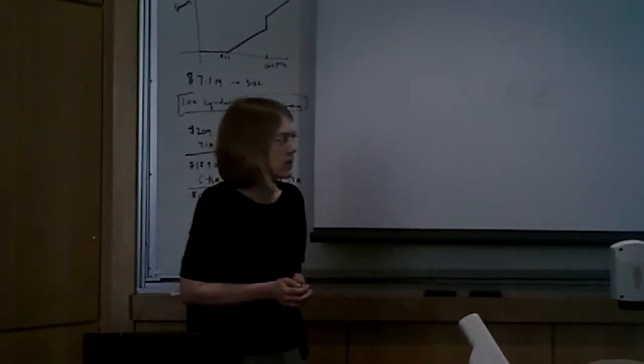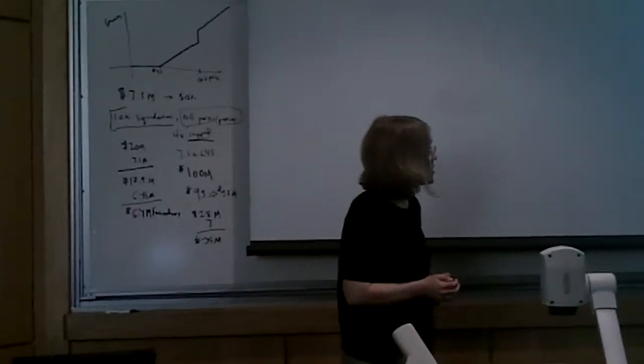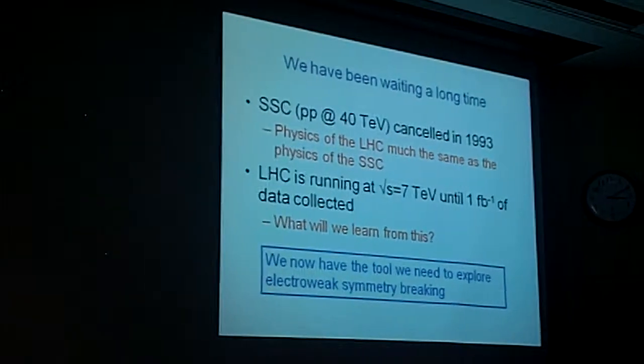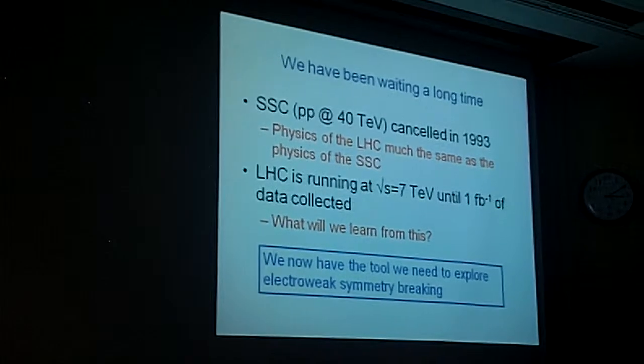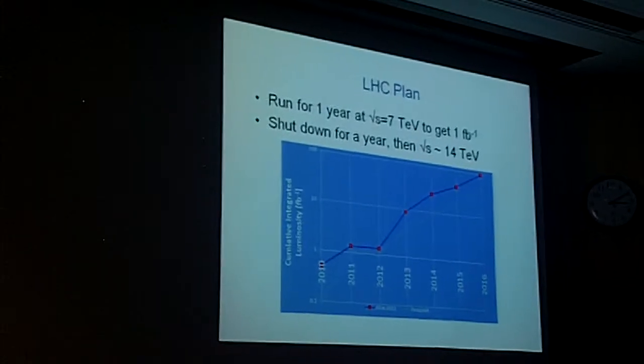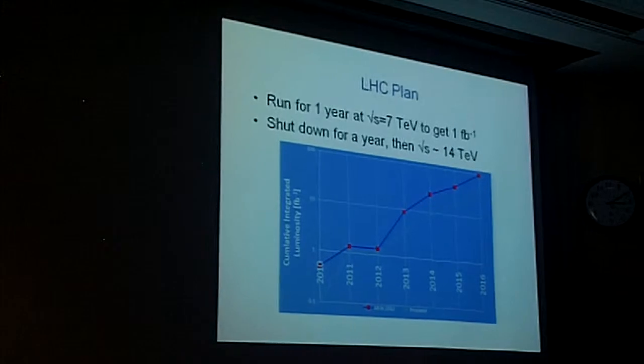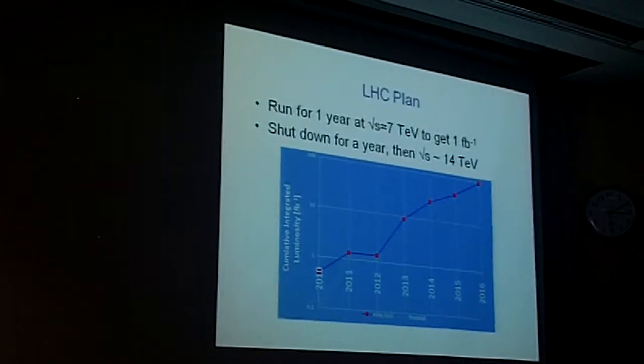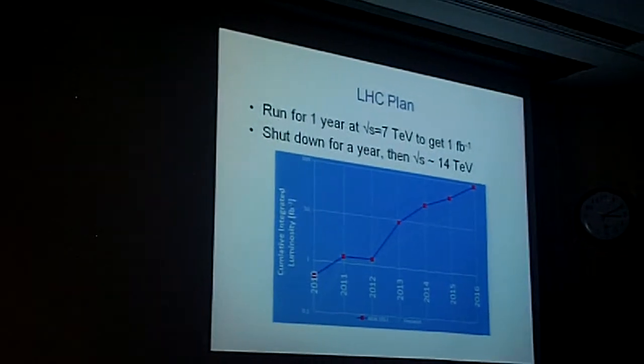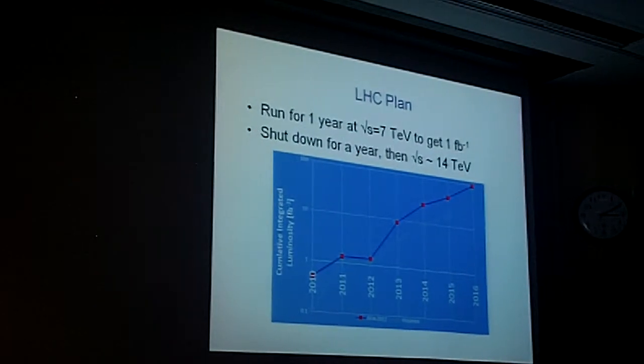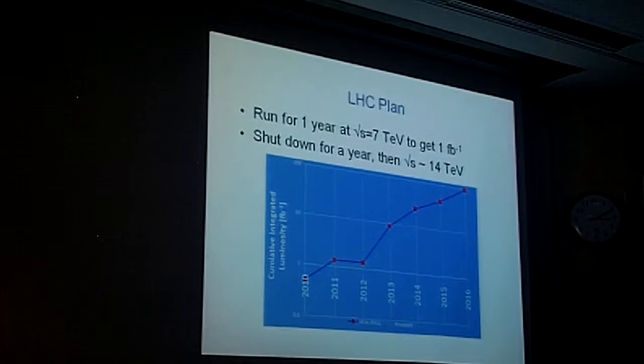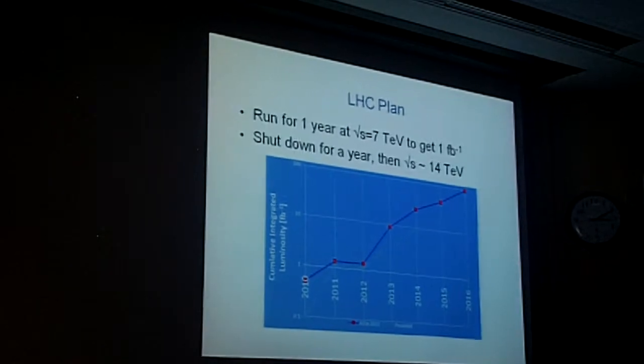The LHC is running now at an energy of 7 TeV, at half energy. It will run until it collects about one inverse femtobarn of data. So the question is, what are we going to learn? Let me just show you the LHC plan. So we're at 2010 here with the red dot. By the end of the year, we expect to collect one inverse femtobarn in 2011. Then you see the curve is flat when they shut the machine down for a year. They upgrade it to an energy scale of about 14 TeV, maybe 13 TeV, but somewhere in that range.